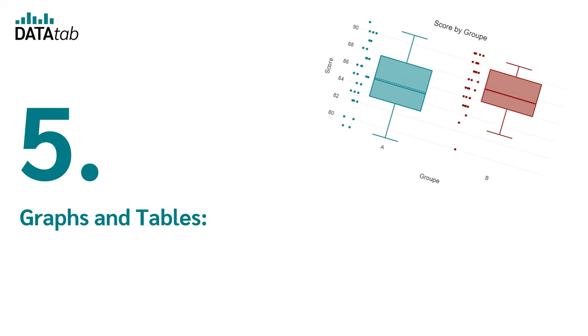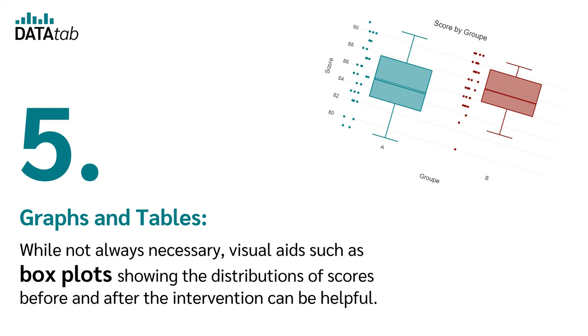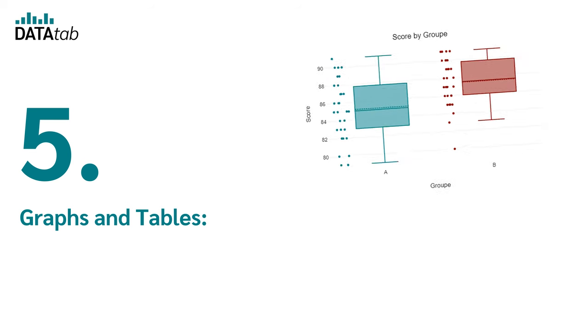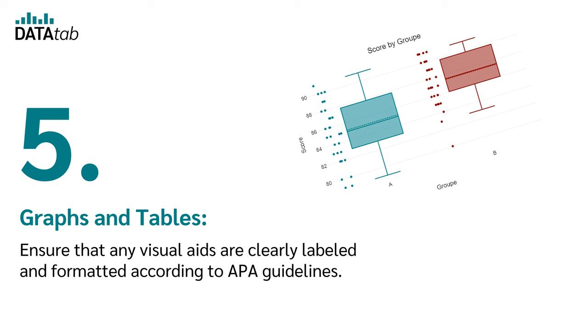Number five: graphs and tables. While not always necessary, visual aids such as box plots showing the distributions of scores before and after the intervention can be helpful. Ensure that any visual aids are clearly labeled and formatted according to APA guidelines.